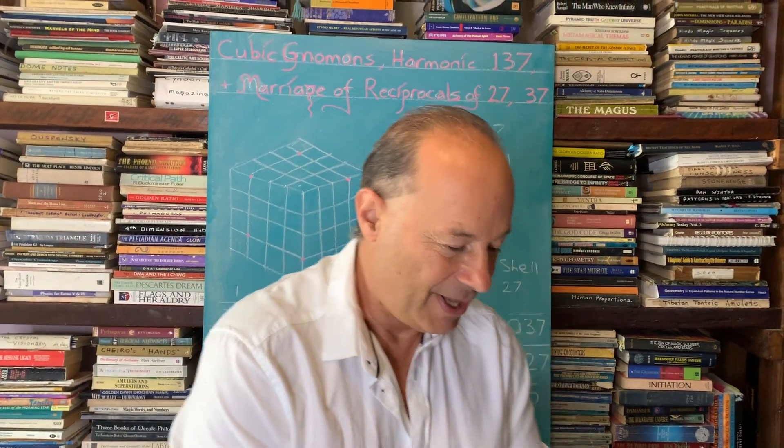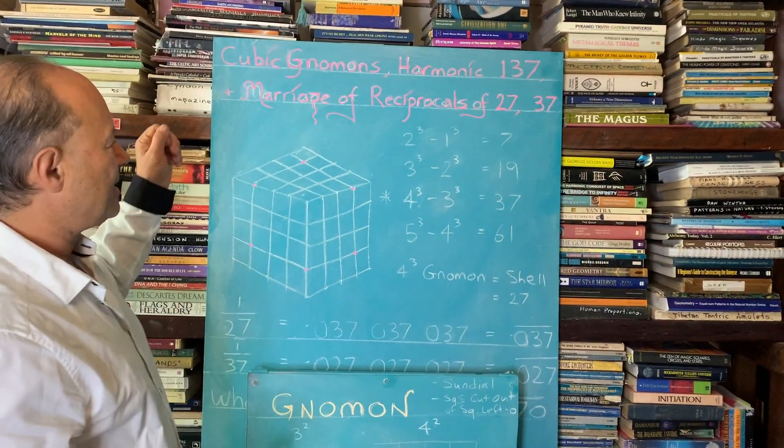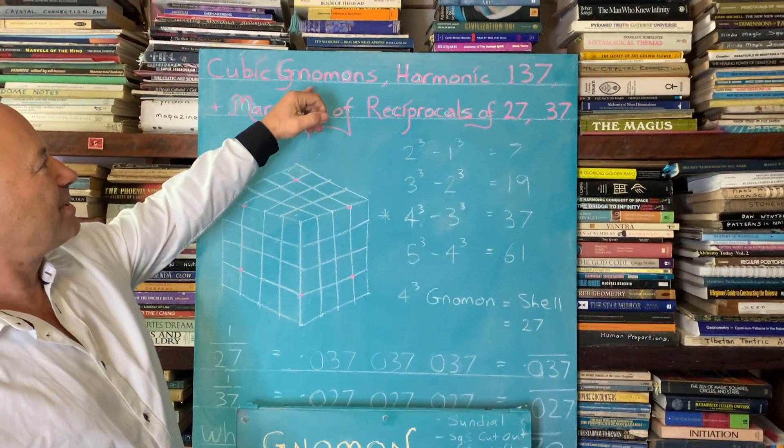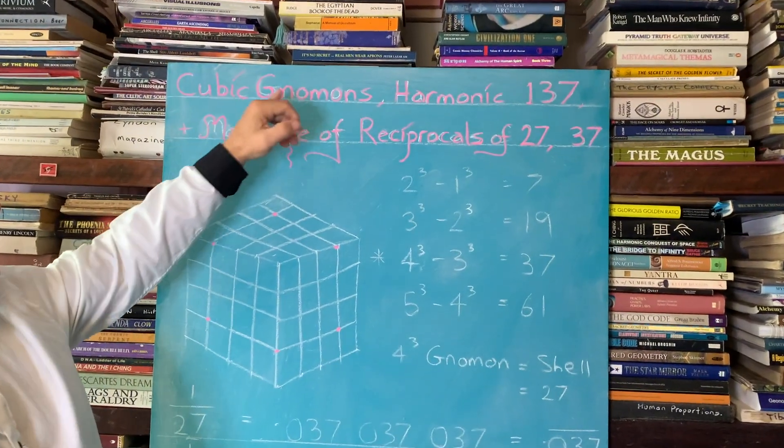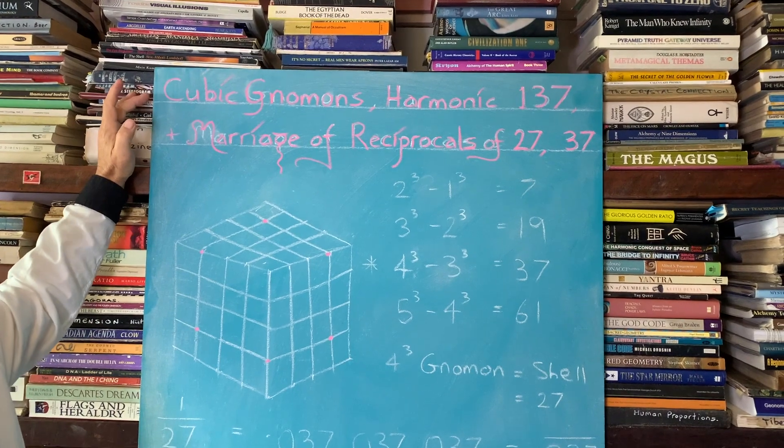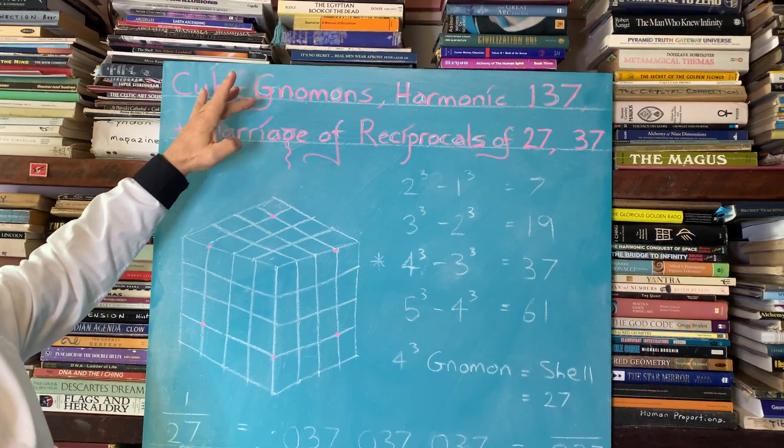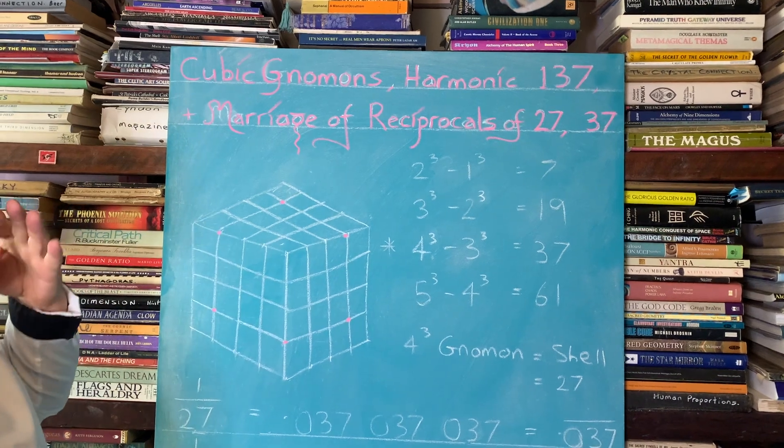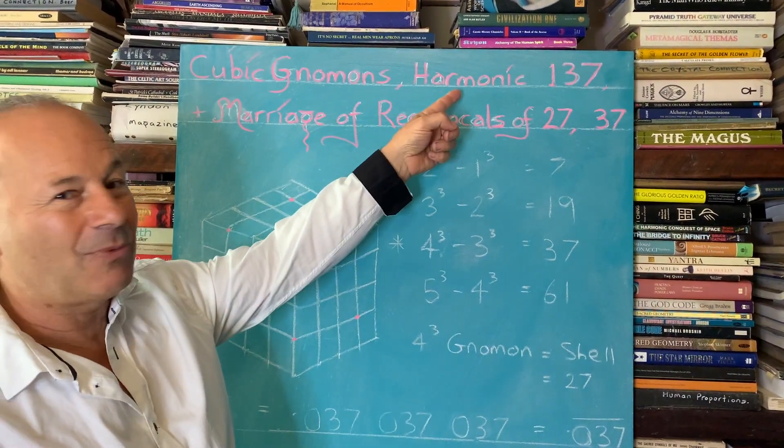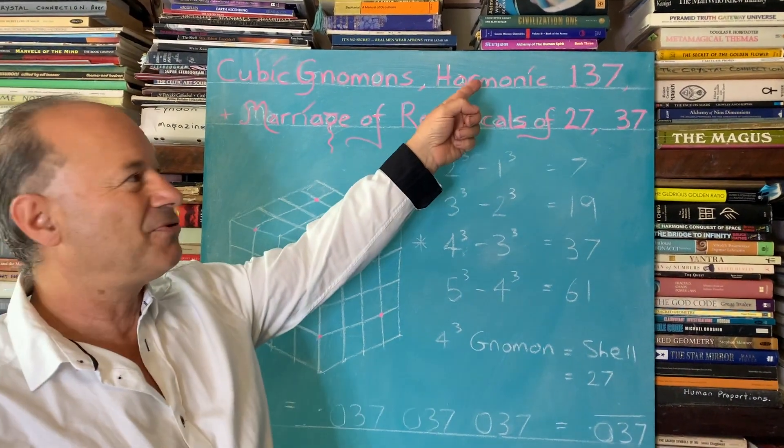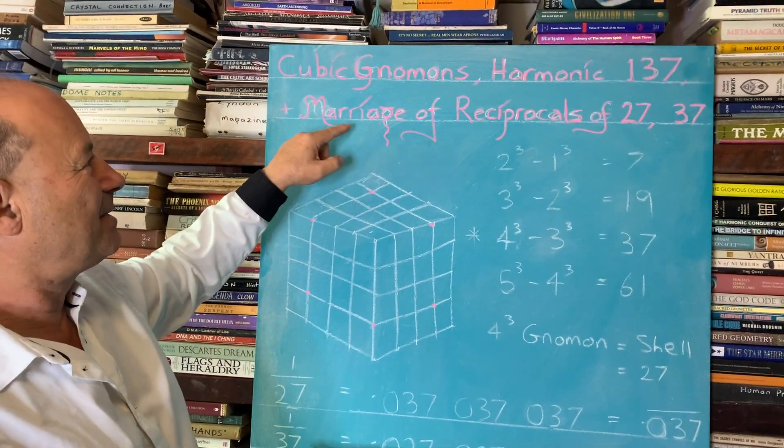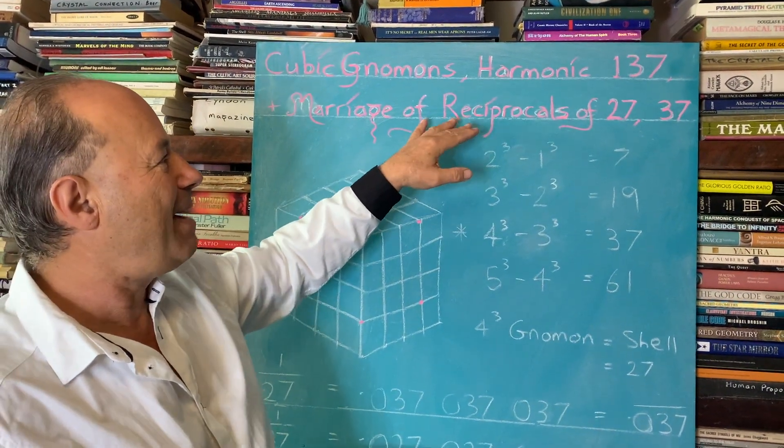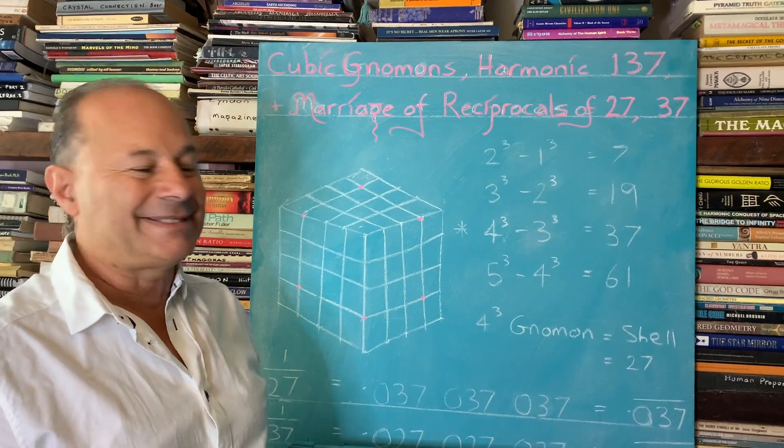So there is a word for this where the lesson is called gnomons. There's a thing called squared gnomons, but we're going to be investigating cubic gnomons. And by examining what's inside the cube, we're going to discover harmonic 137, which has got to do with the Vitruvian angle. And we're going to discover an amazing marriage of the reciprocals of 27 and 37.